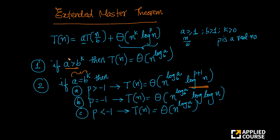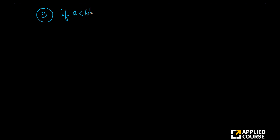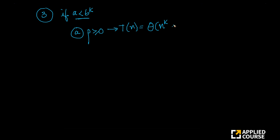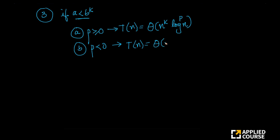Case 3 corresponds to when A is less than b^k. Again, depending on the value of p: Case 3a — if p is greater than or equal to 0, then T(n) is theta of n^k · log^p(n). Case 3b — if p is less than 0, then T(n) is theta of n^k.